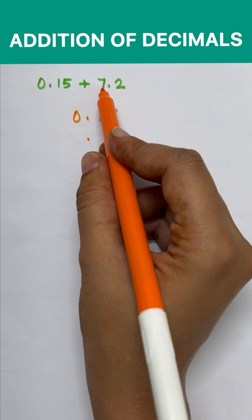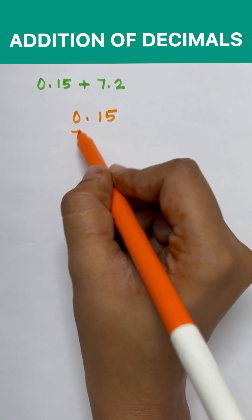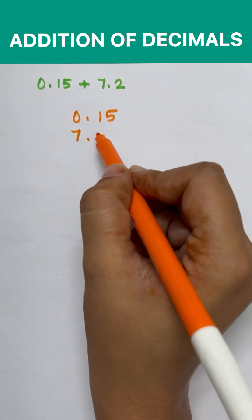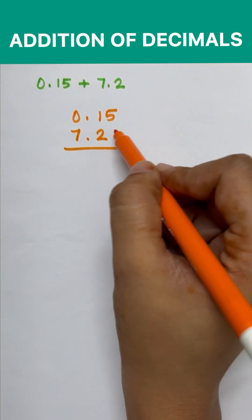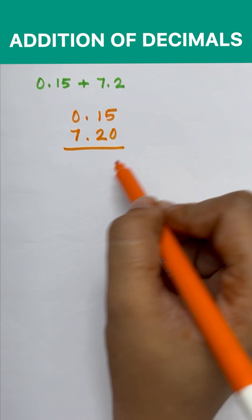In the left side 7 is written so we will write 7 and on the right side you have to write 2. Here we can find empty space so we will write 0 here. Now we will add.